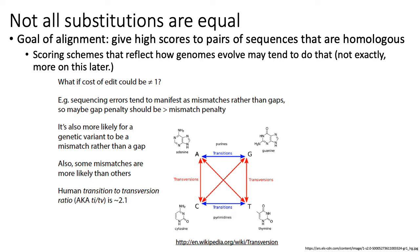For example, when talking about genome evolution, transitions tend to occur more frequently than transversions, at least in humans. So if you want an alignment that captures that notion, you should penalize transversions more highly than transitions, because transversions tend to be more rare and therefore shouldn't appear in sequence alignments as often.